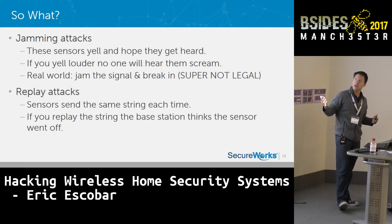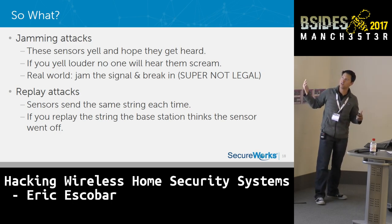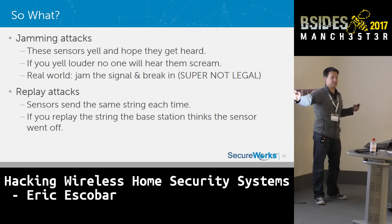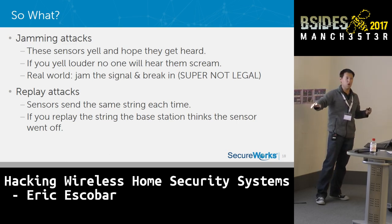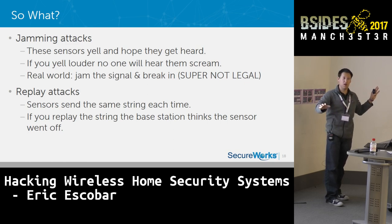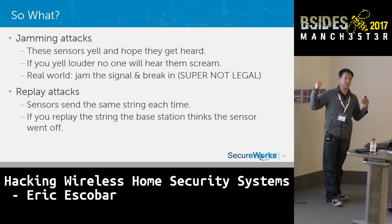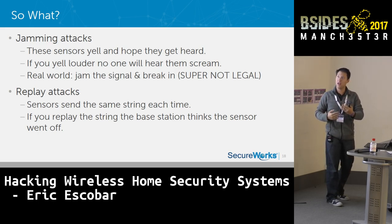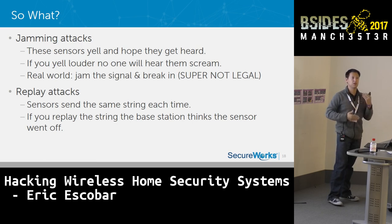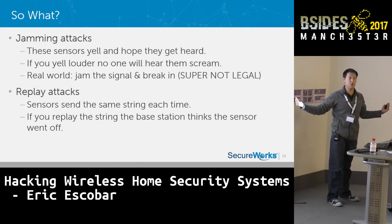You can also do jamming attacks. The sensor yells at the base station to say 'someone opened the door' or 'motion was detected.' But if you play anything on that frequency louder than what the door is transmitting, the base station has no idea that someone's yelling. It has no idea the door opened, the motion went off, or even the smoke alarm triggered. For $145 you could essentially break into somebody's house and they would have no idea.